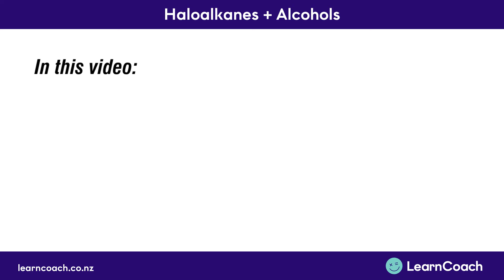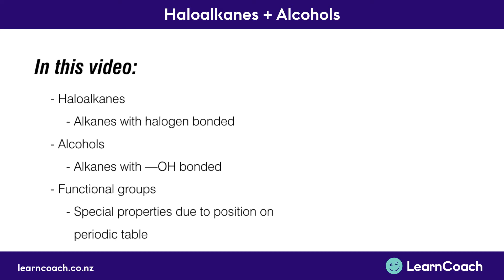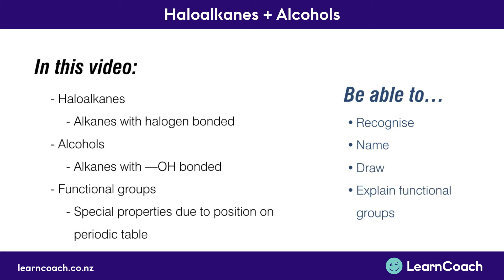In this video we've looked at the more sophisticated hydrocarbons: haloalkanes, which are alkanes with a halogen bonded, and alcohols, which are alkanes with a hydroxyl group bonded. We also talked about functional groups and how their special properties come from their position on the periodic table. The exam keyword questions you should now be able to answer are: recognizing haloalkanes and alcohols, naming both, drawing both, and explaining functional groups and what makes them special. Going forward, videos will cover concepts rather than rote learning, so make sure you understand all previous videos before moving on.